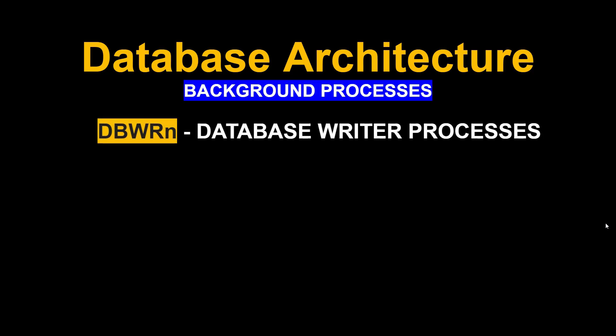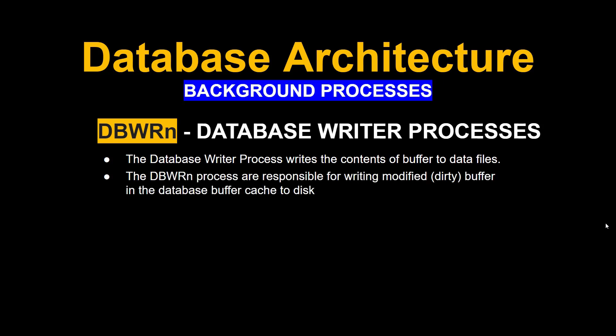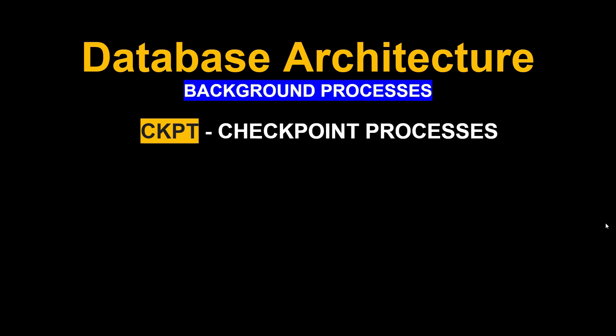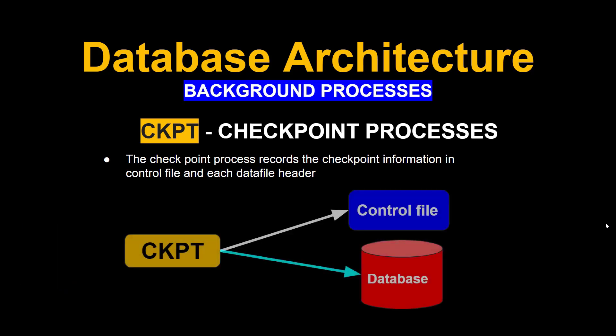Next is the Database Writer Process, DBWR. The Database Writer Process writes the contents of buffers to data files. It is responsible for writing modified and dirty buffers in the database buffer cache to disk. Next is the Checkpoint process. The Checkpoint Process records checkpoint information in the control file and each data file header, updating checkpoint information in both the control file and the data file header.